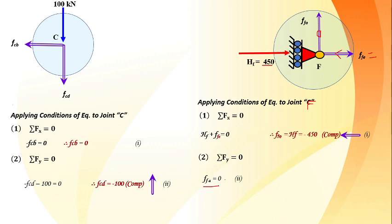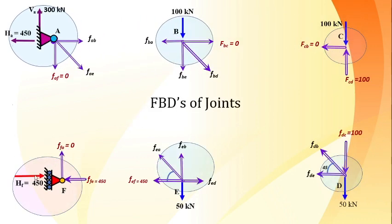After updating the truss figure with known forces, we identify the next joints with only two unknowns. Checking all joints: joint D has two unknowns, and joint A also has only two members with unknowns remaining. So we proceed with joint A and joint D next.